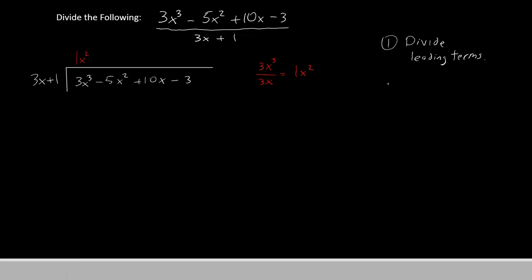Now on to the second step. Now we're going to multiply what we just got by the divisor. We're going to multiply this 1x squared times both of these terms and put them underneath the polynomial on the inside.